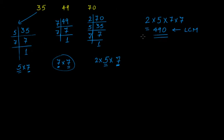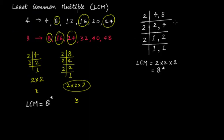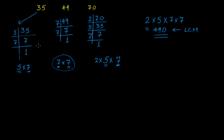Now for the second example: in Part 1 we calculated that the LCM of 35, 49, and 70, using separate prime factorization, was 490. Now we'll apply this combined method. Write 35, comma 49, comma 70, then draw the vertical and horizontal lines.